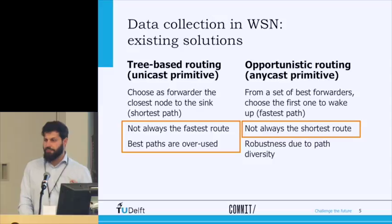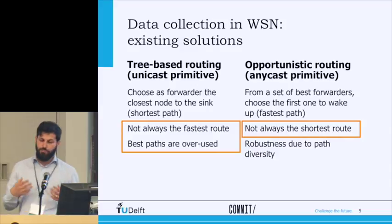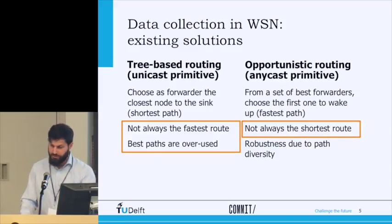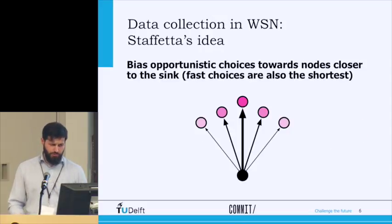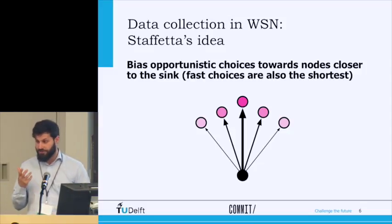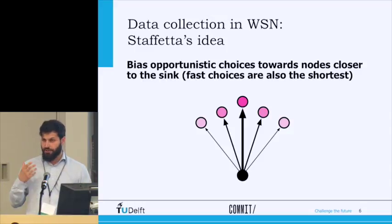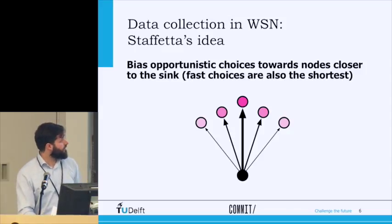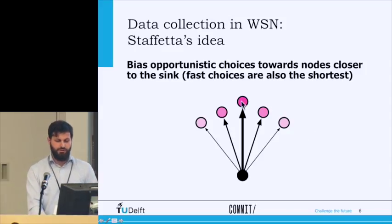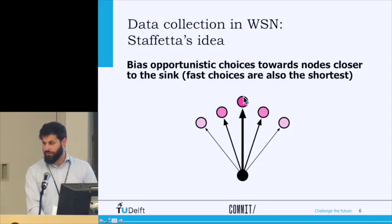Ideally, we would like a mechanism that follows both a short path and a fast path — fast in terms of forwarding times — and also provides robustness to dynamics and load diversity. This is what Stafetta does. Stafetta empowers opportunistic mechanisms by making the choices towards nodes closer to the sink more probable. Instead of having only one or a few candidates, basically we can forward to everyone, but the probability of forwarding to the best nodes — the ones closer to the sink — is higher.